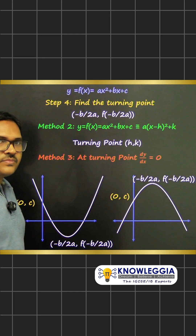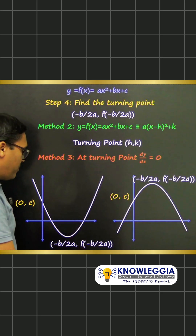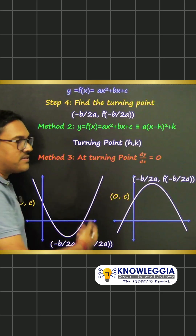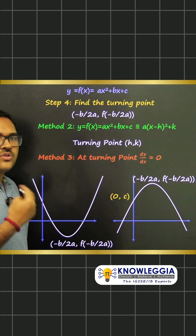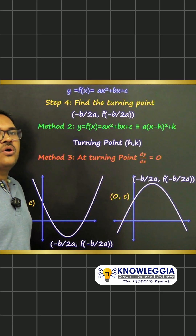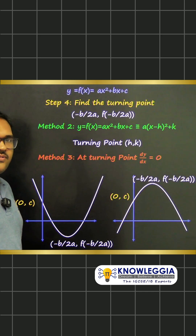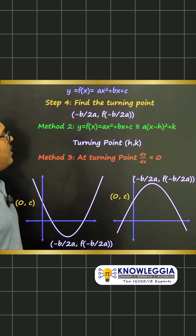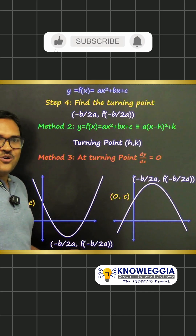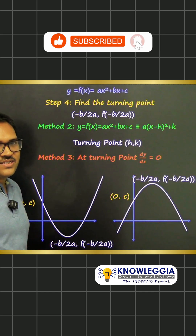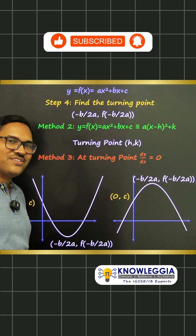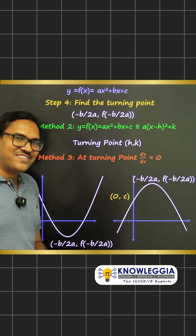So those are the three ways to find the turning point. Using all these — the shape, intercepts, and turning point — you can plot and draw a sketch of the quadratic curve. If you found this helpful, please subscribe to our channel and share with your friends. Thank you, bye.